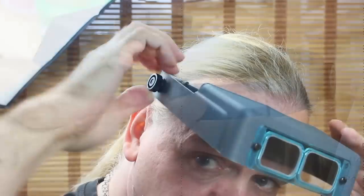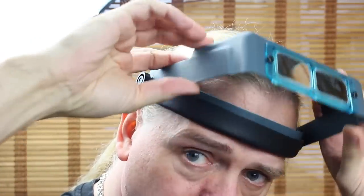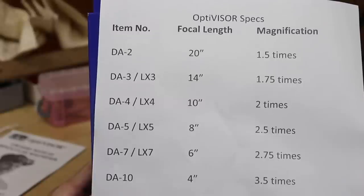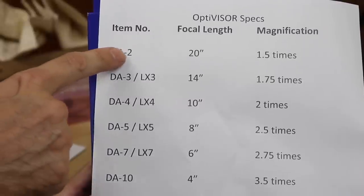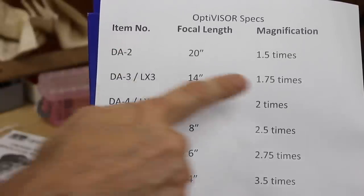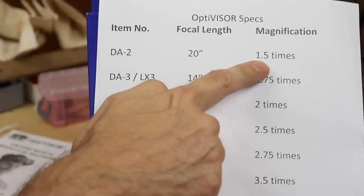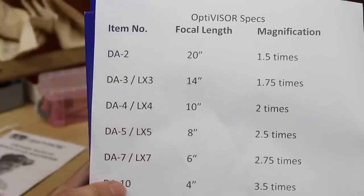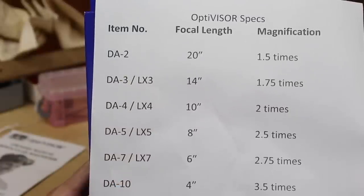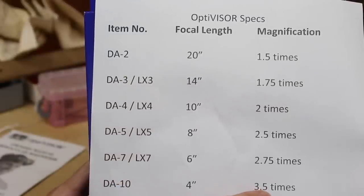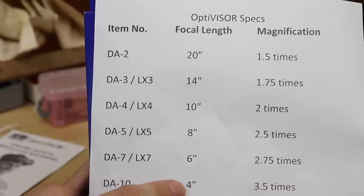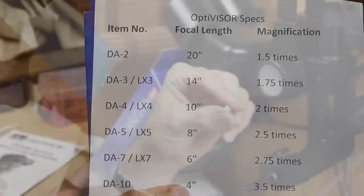Magnification comes in six choices ranging from the number 2 lens, which gives you 1.5 times magnification at a distance of 20 inches, right up to the number 10 lens, which gives you 3.5 times magnification at a distance of just 4 inches. So the important thing to note here is that the higher the magnification, the closer the lens focuses.